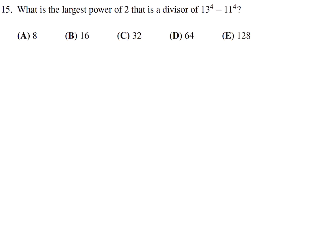What is the largest power of 2 that is a divisor of 13 to the power of 4 minus 11 to the power of 4? I'll just do it in the most straightforward way. 13 to the power of 4 is 28,561. 11 to the power of 4 is 14,641. When you subtract them, you get 13,920. If you keep dividing by 2, you'll find that it is divisible by 32. 32 is 2 to the power of 5. Number 15, the answer is C.